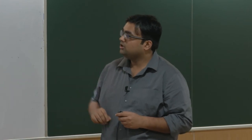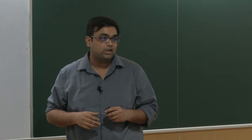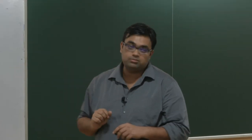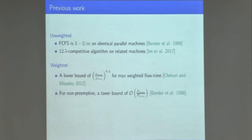There is a large gap in power between the online algorithm and the offline optimal. What is known: for equal weights, simple first-come-first-serve gives a 3-competitive ratio. Then there was a result giving 13.5, later improved to 12.5, on related machines. On identical machines — where all machines have the same speed — these results are essentially for preemptive algorithms, not non-preemptive. And when you have weights, there is a strong lower bound, so the question is what to do.